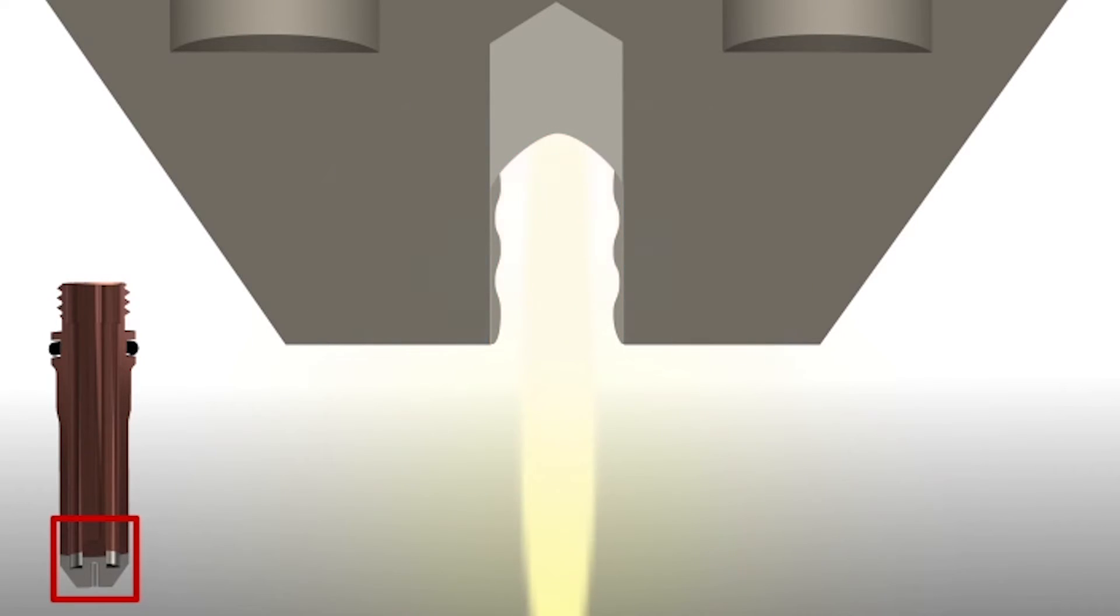While a copper electrode is fully worn at one millimeter, a silver electrode can cut until the hafnium is worn to two millimeters while still maintaining good cut quality.